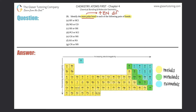The electronegativity difference is found by subtracting two values. Take the electronegativity of the two atoms within the bond. The electronegativity difference is always going to be a positive number — subtract the atom with the higher electronegativity minus the atom with the lower electronegativity. If you get a negative, just take the absolute value.